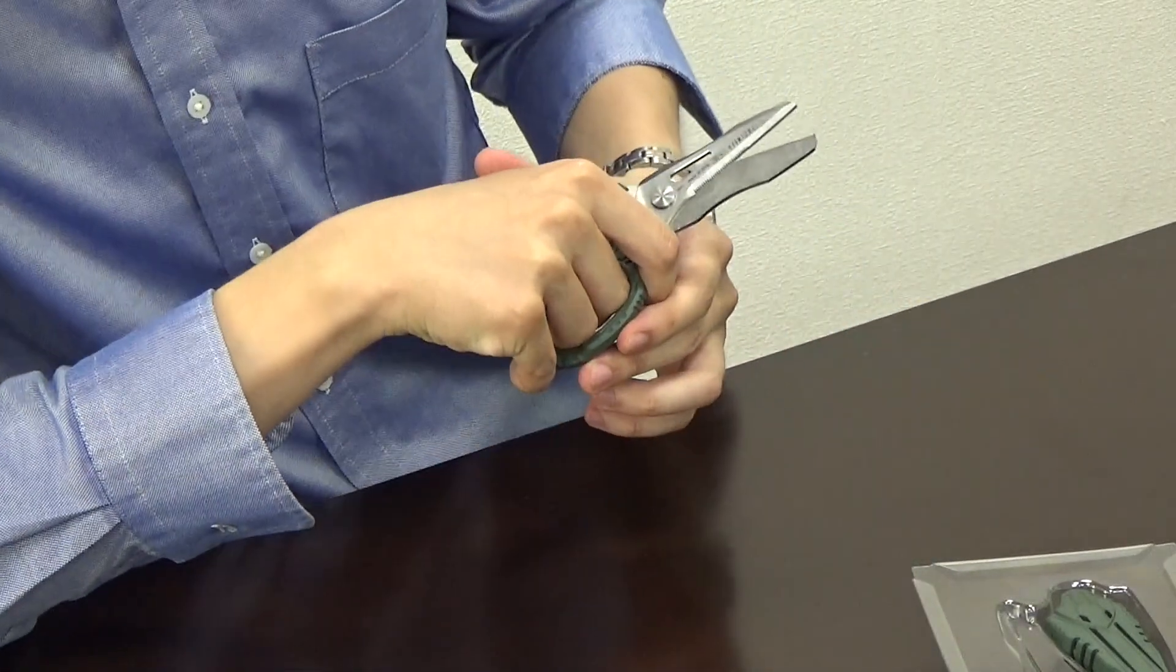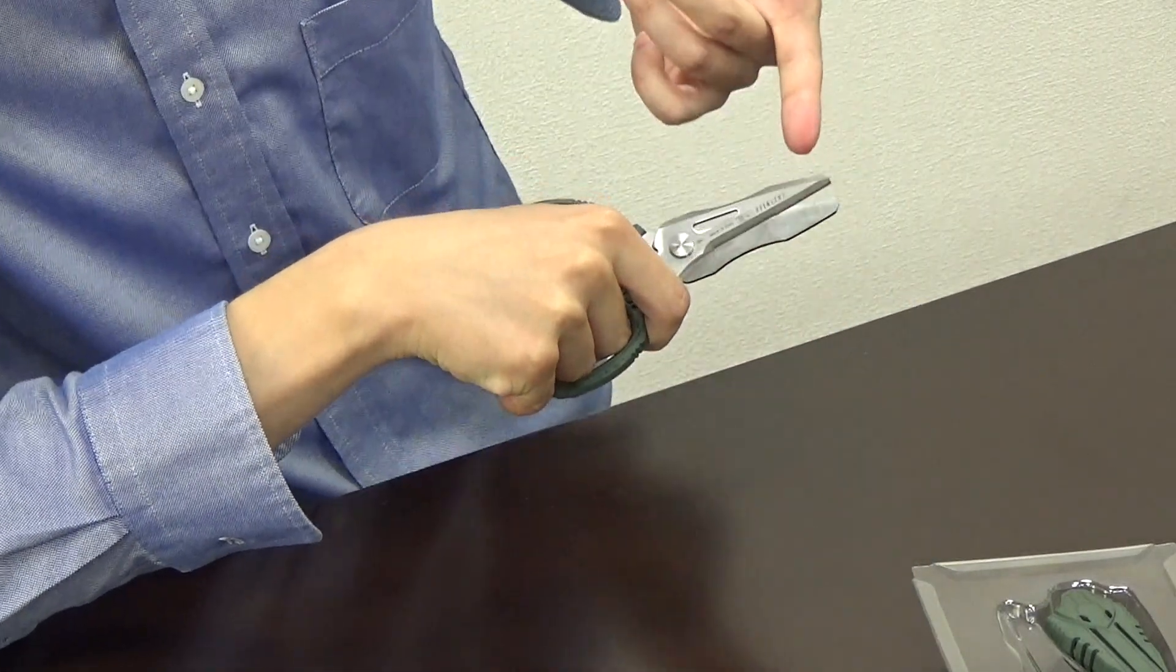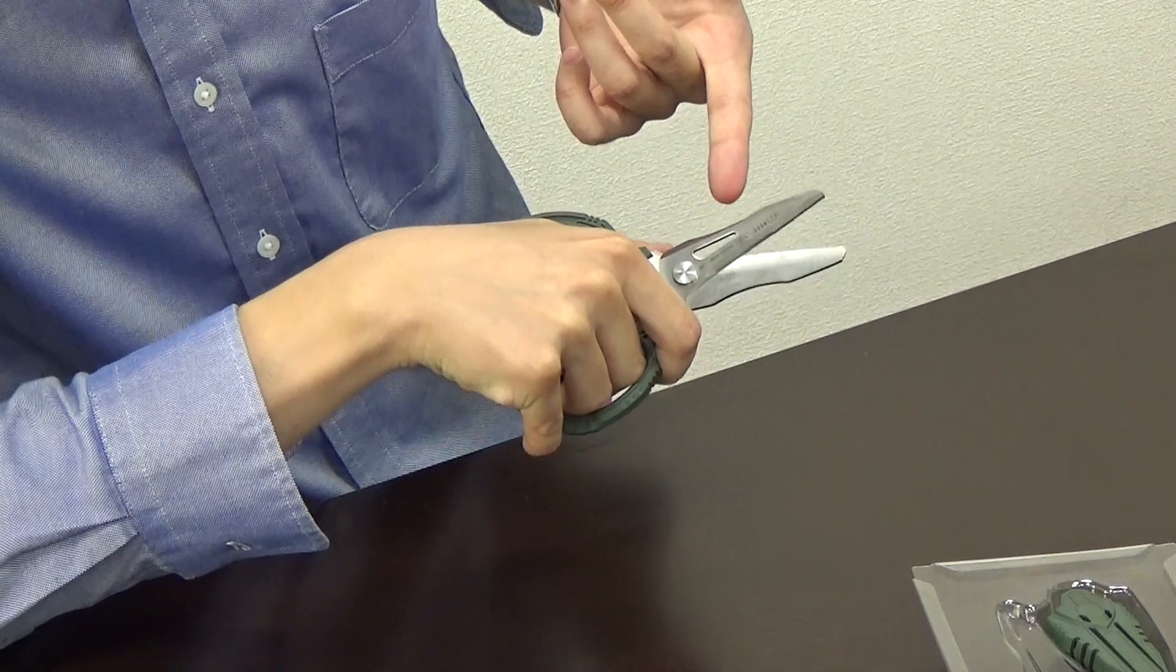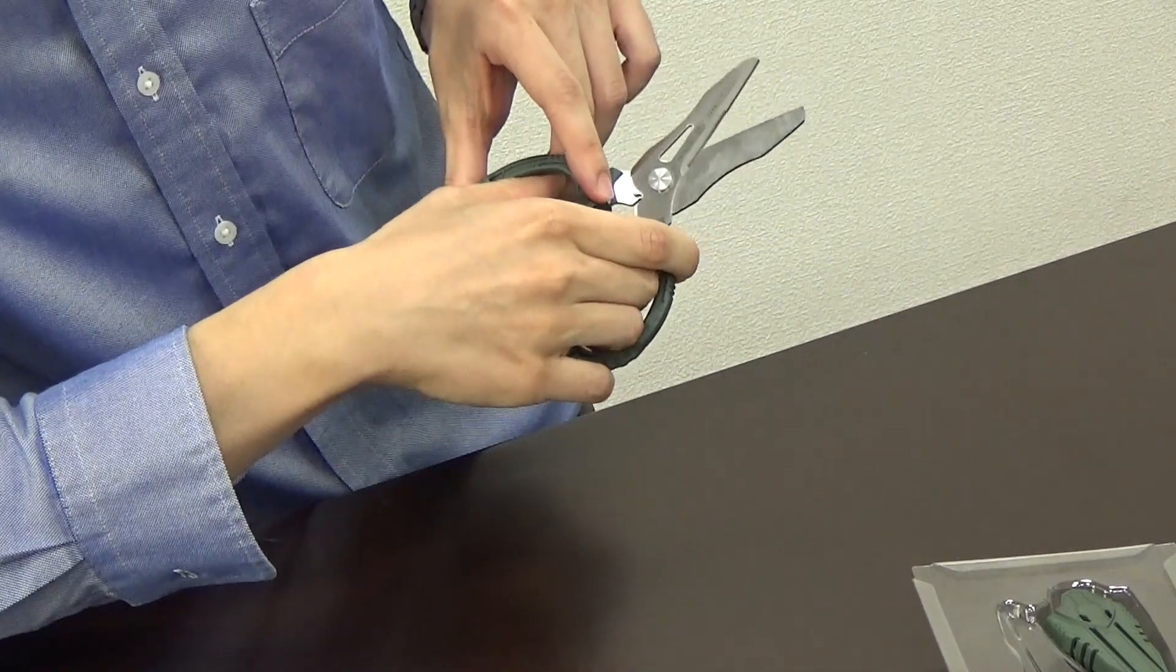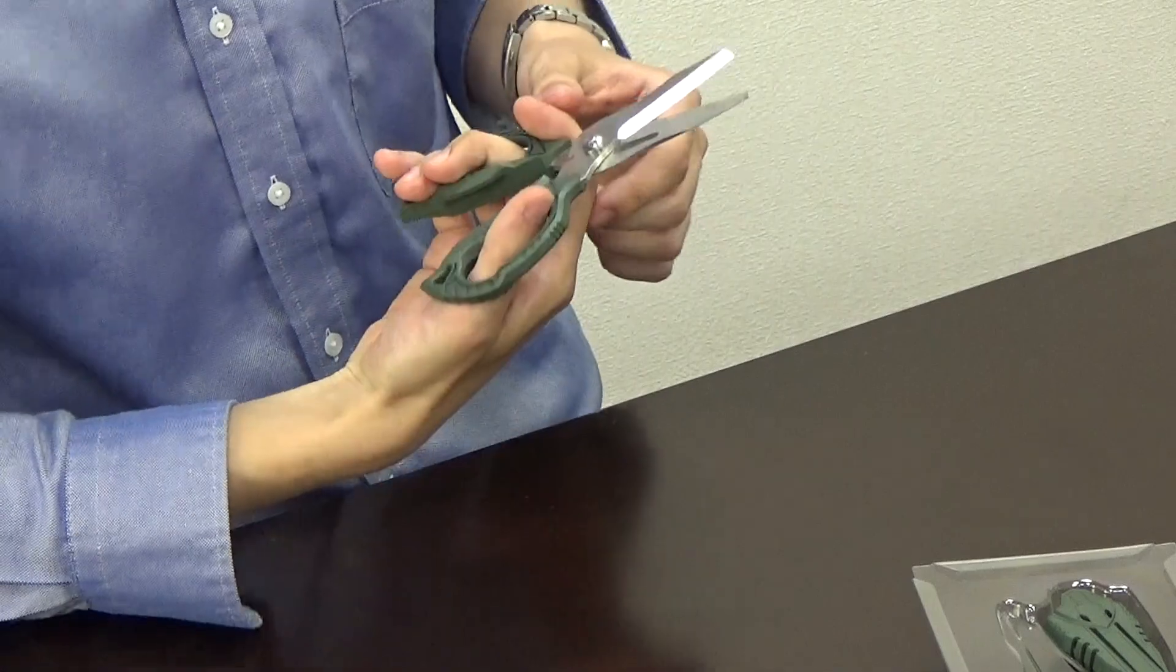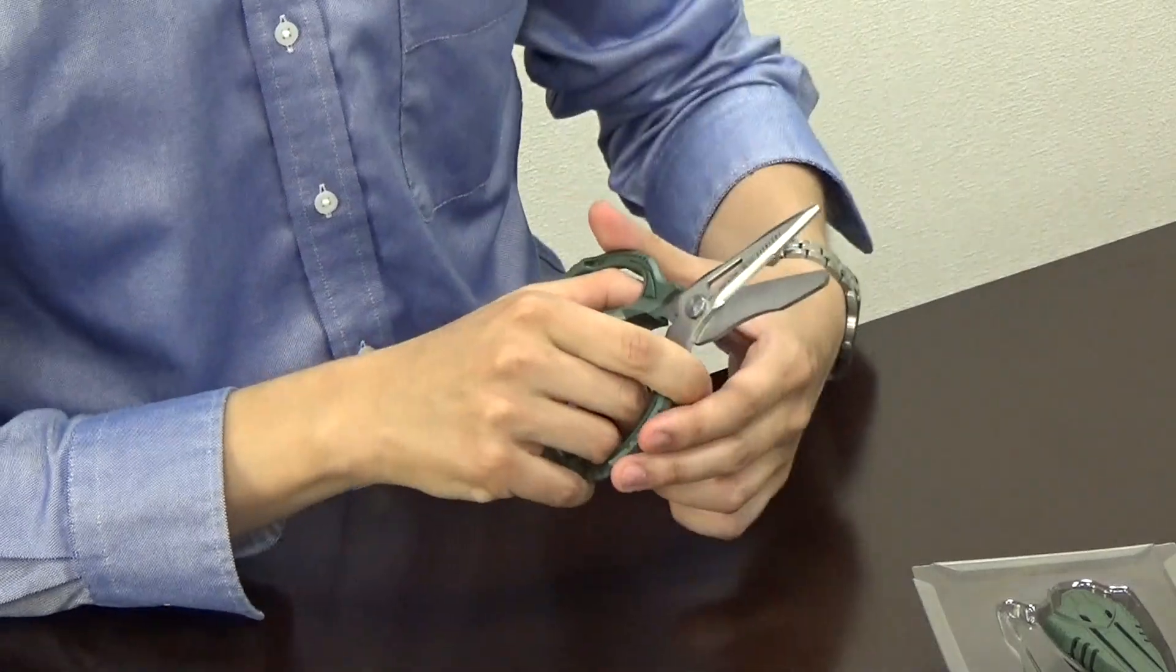Now I can see those features. We have the flat blade right here, the micro serrations. In the inside we have the wire cutter and at the outside we have the safety box opener.